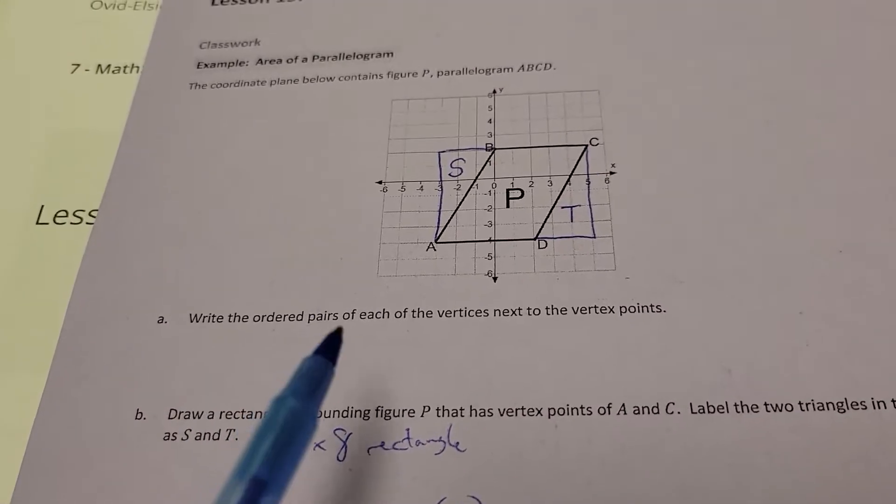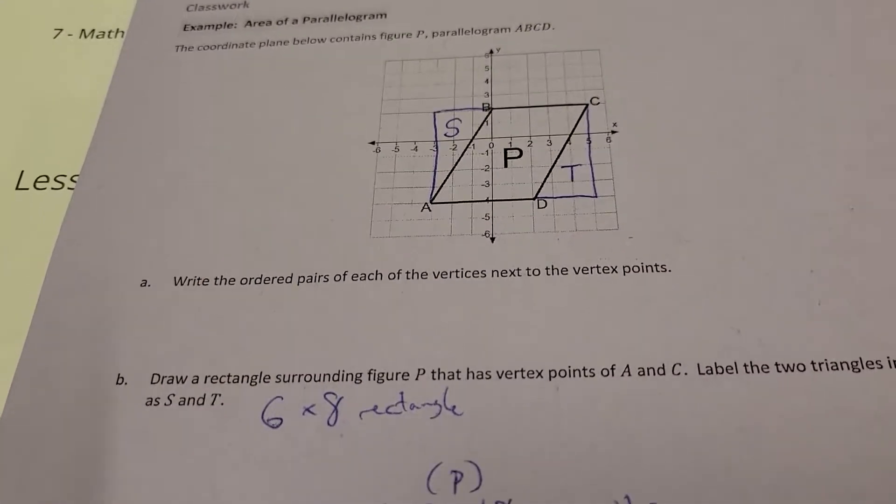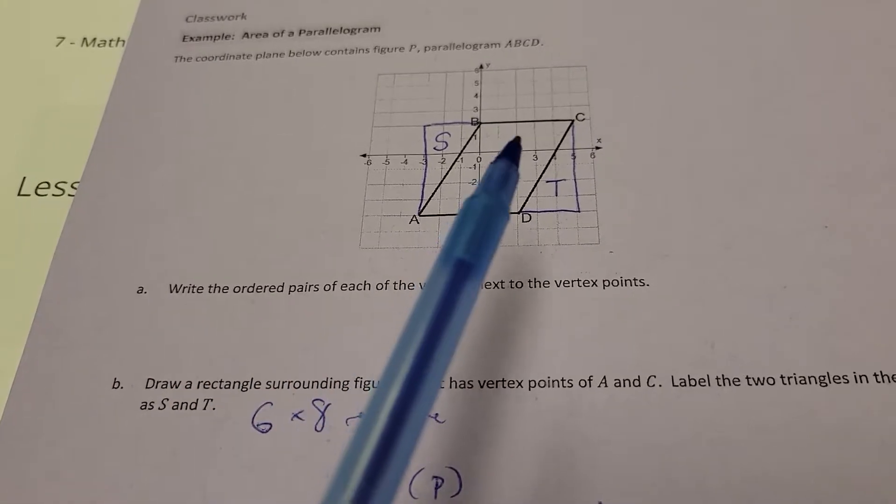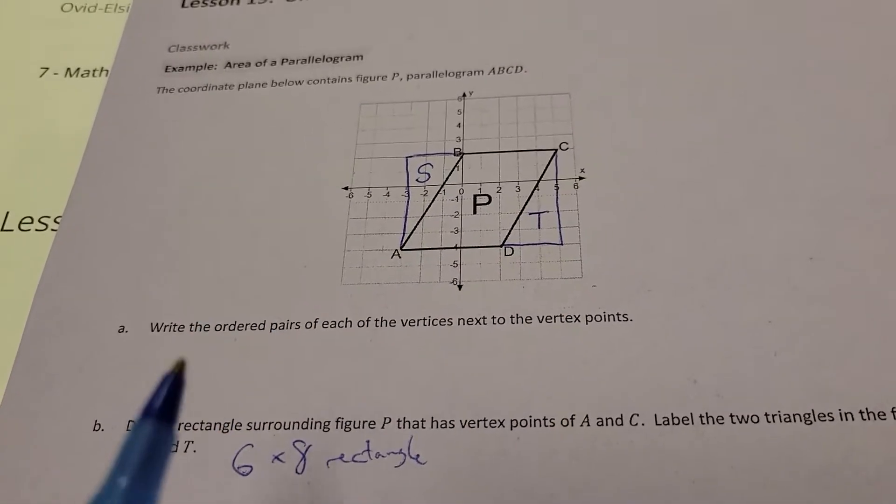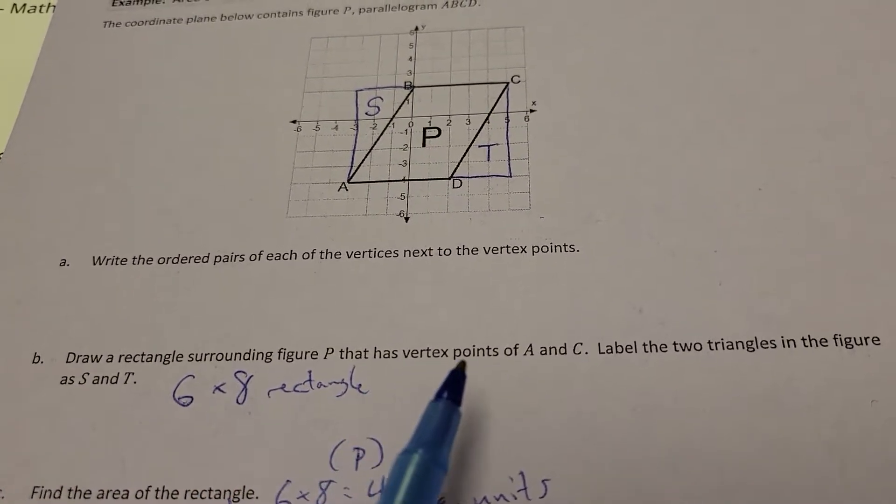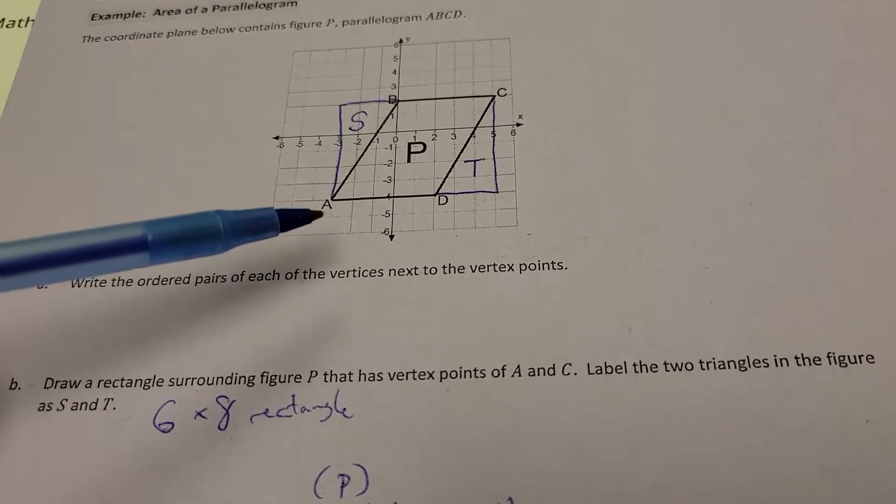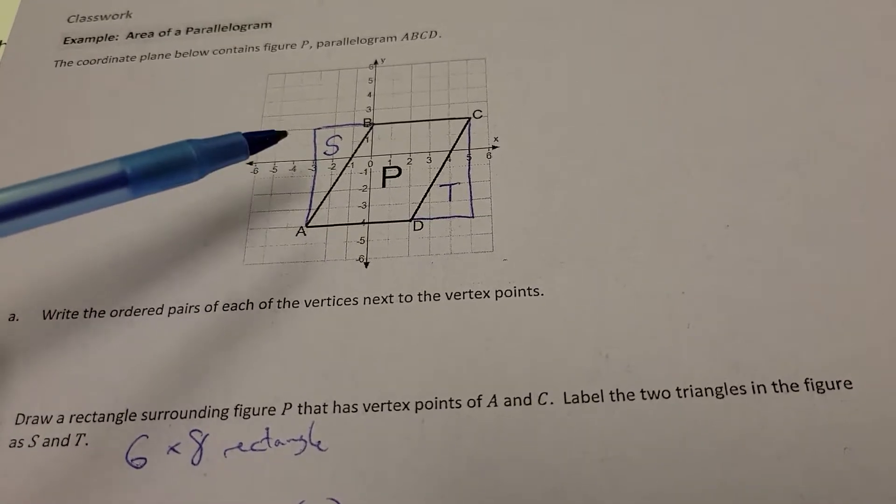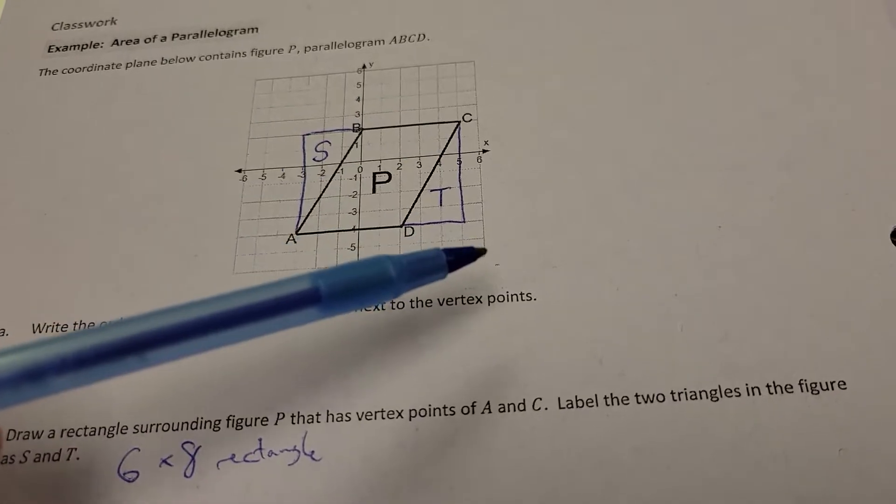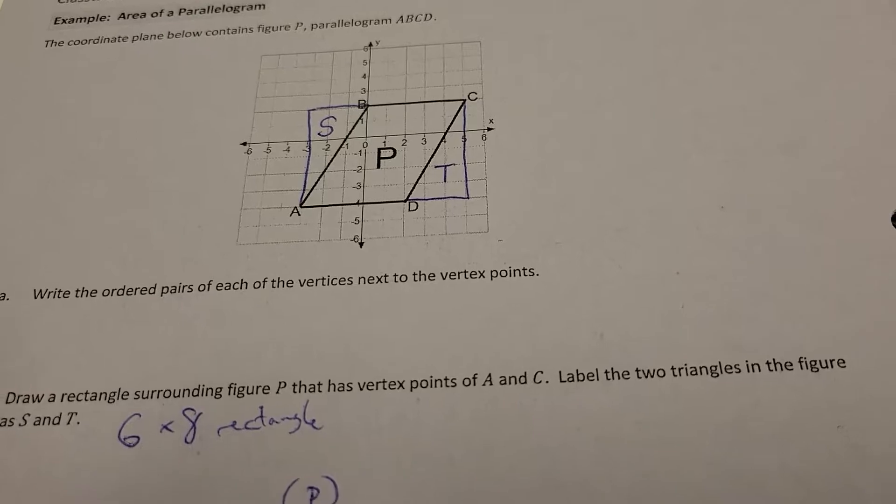Alright, so first up, we're going to take a look at this parallelogram P. And we're not going to write the ordered pairs here because it kind of clutters up the picture. That's something we'll save for another lesson. Draw a rectangle surrounding figure P that has vertex points of A and C. Label the two triangles of figure S and T. So what I did was I was just leaning over a parallelogram. I kind of straightened it out and made it like a big, long rectangle. So now I have the parallelogram and then two right triangles there, S and T.